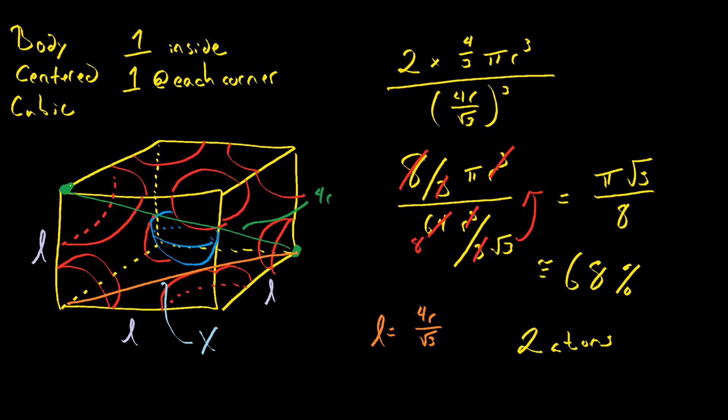I know I tore through that math really, really fast, but it's not too important. I mean, it would help if you're good at geometry and Pythagorean theorem - it would be helpful if you can do this sort of thing on your own rather than trying to memorize simple cubic is 52%, body-centered cubic is 68%. You can do that if you really want, but you don't have to if you can work this out for yourself. It only takes a couple of minutes when you know what you're doing.